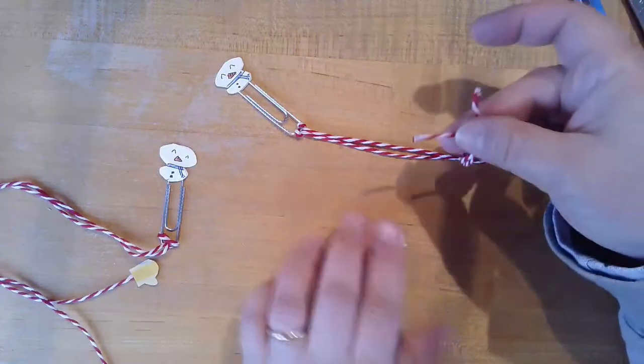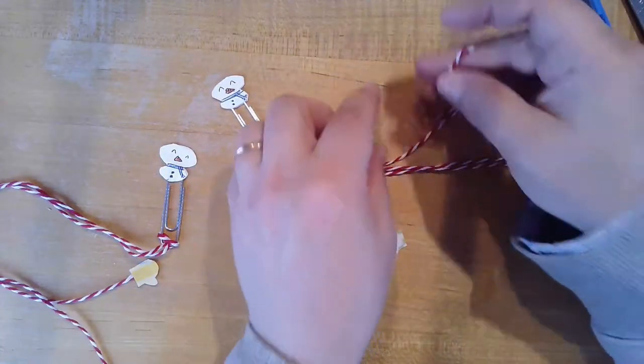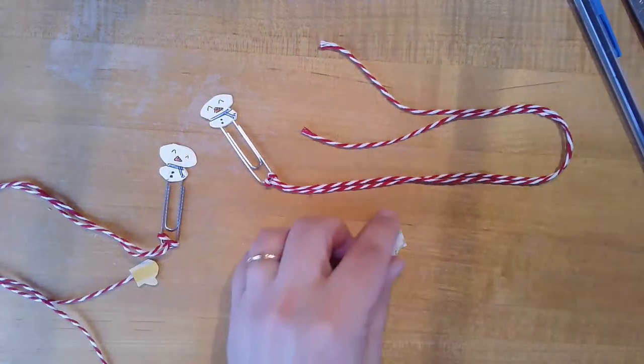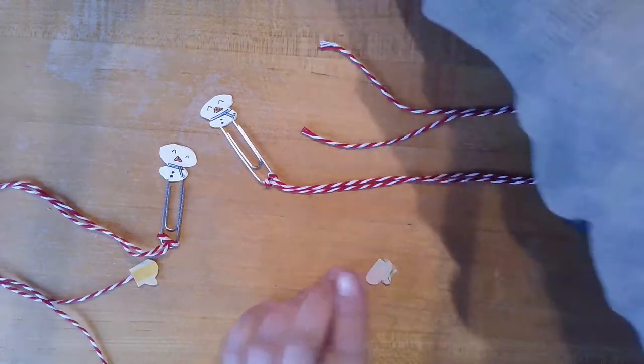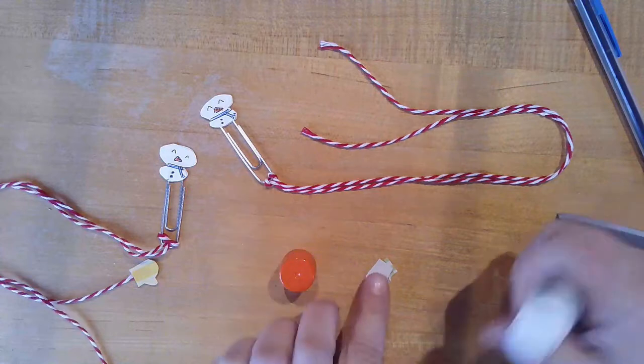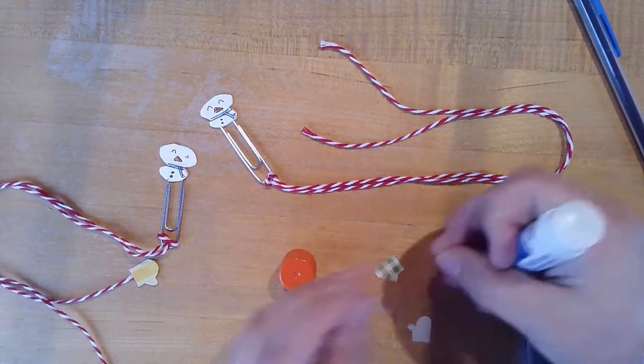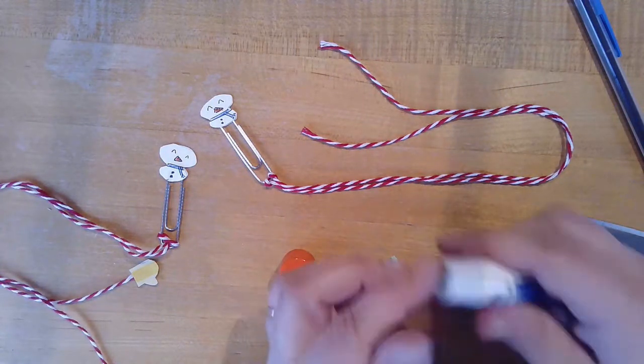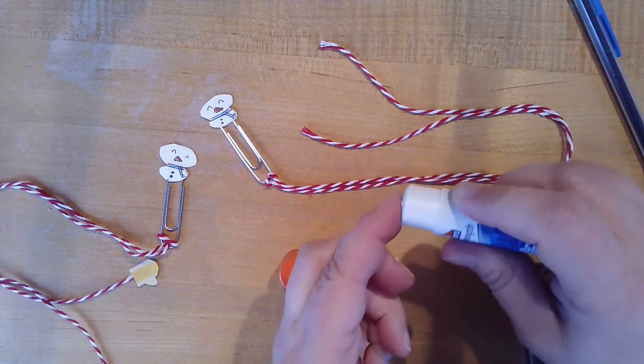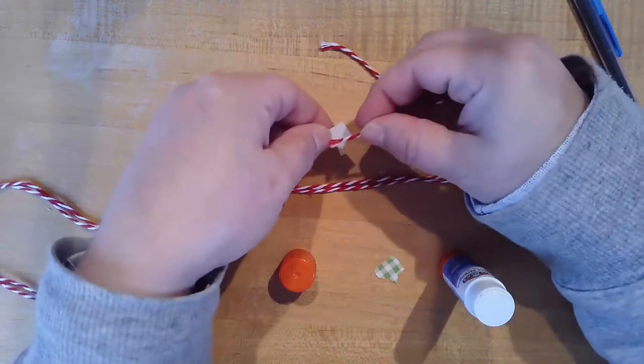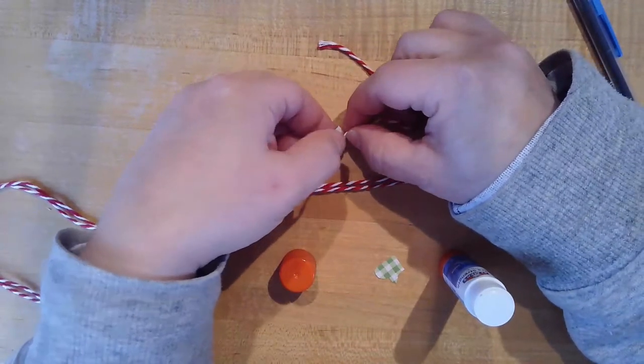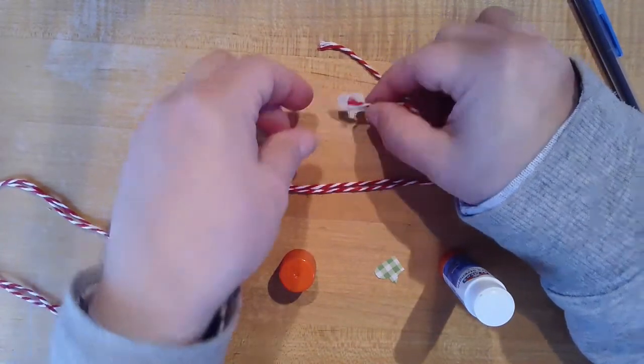But it leaves me with two ends free that I can glue my mittens onto. So again, taking my glue stick and put some glue on either side of my mitten.